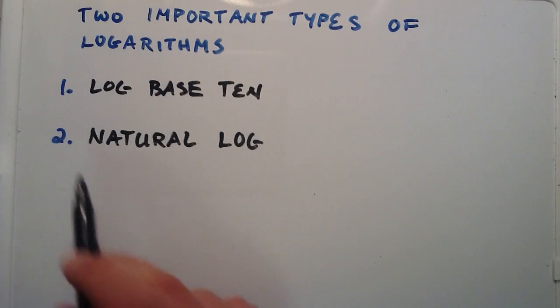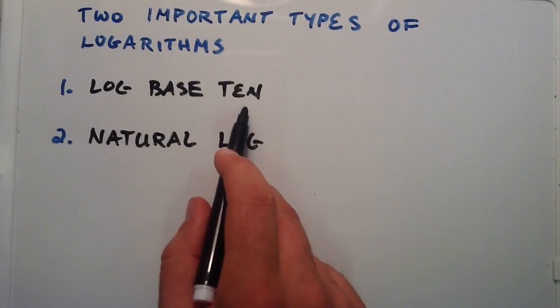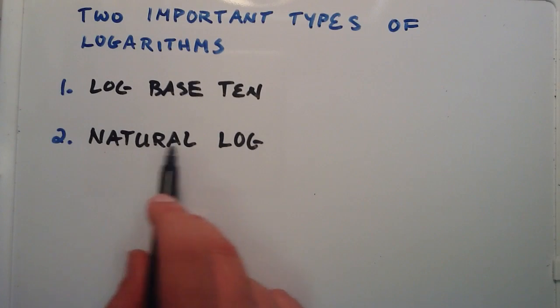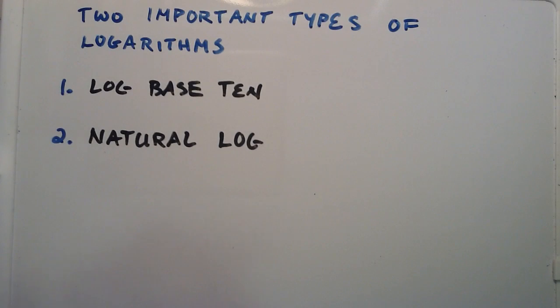The first one is simply referred to as log base 10. The second is the natural log. And these two types of logarithms are so important that they're placed on most good calculators.